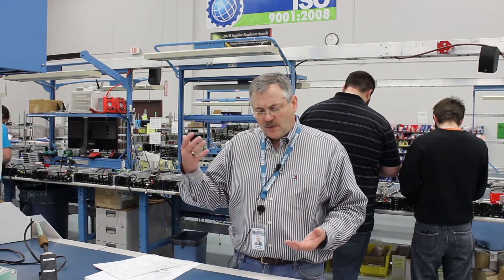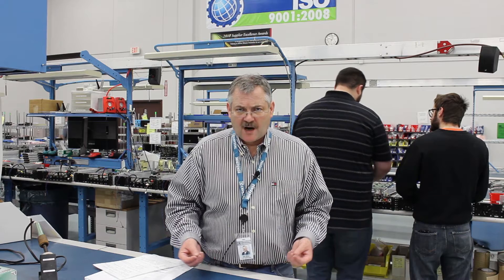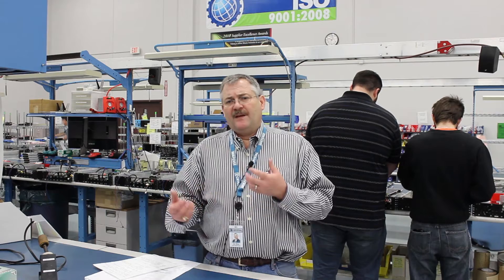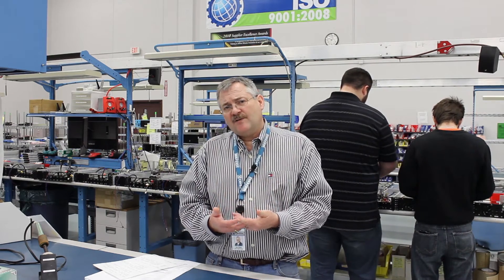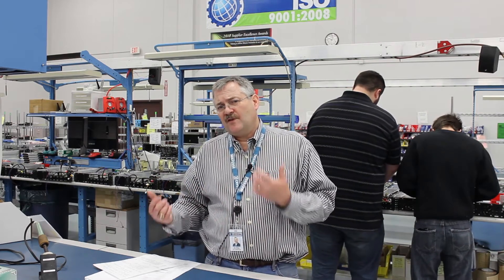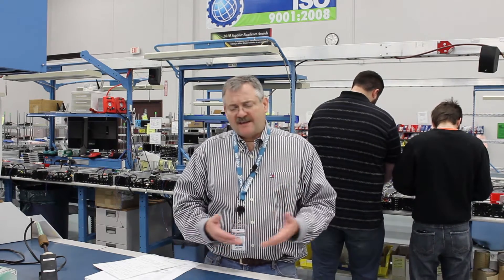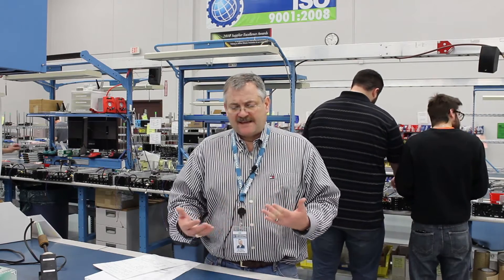As a general rule, we'll look at either minus 55 or minus 65 as the temperature we'll test to in the storage realm. We also look at operation, going down to minus 40 for operational testing. There are some things you have to do to modify COTS equipment to make it perform at those levels, and that's one of the things we do here at Crystal Group that's pretty unique — a lot of our competitors aren't able or willing to do that, which sets us apart.